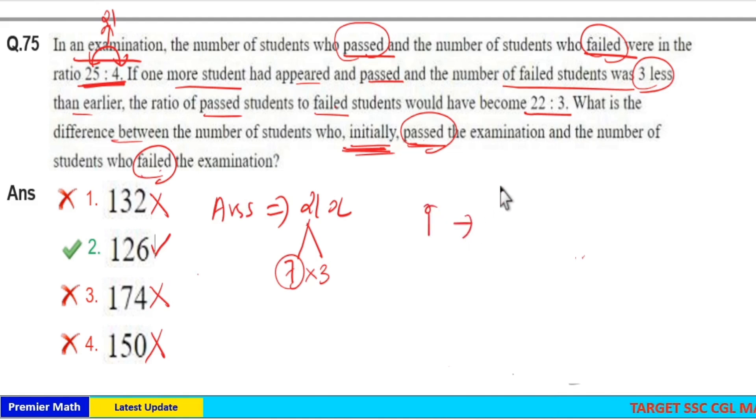Initially, the ratio of passed and failed students was 25 is to 4. Finally, the ratio of passed and failed students became 22 is to 3. I can write it as 25x and 4x and 22y and 3y. Now the difference between passed and failed students initially is 25x minus 4x which is 21x. So this is our answer.